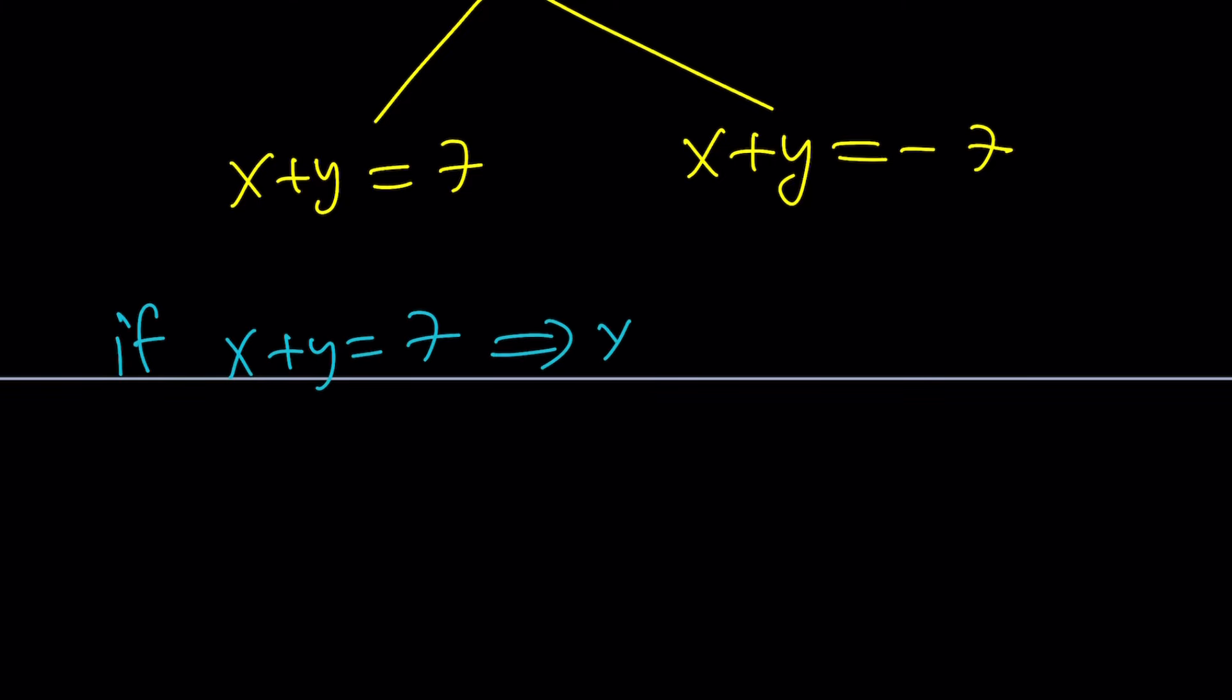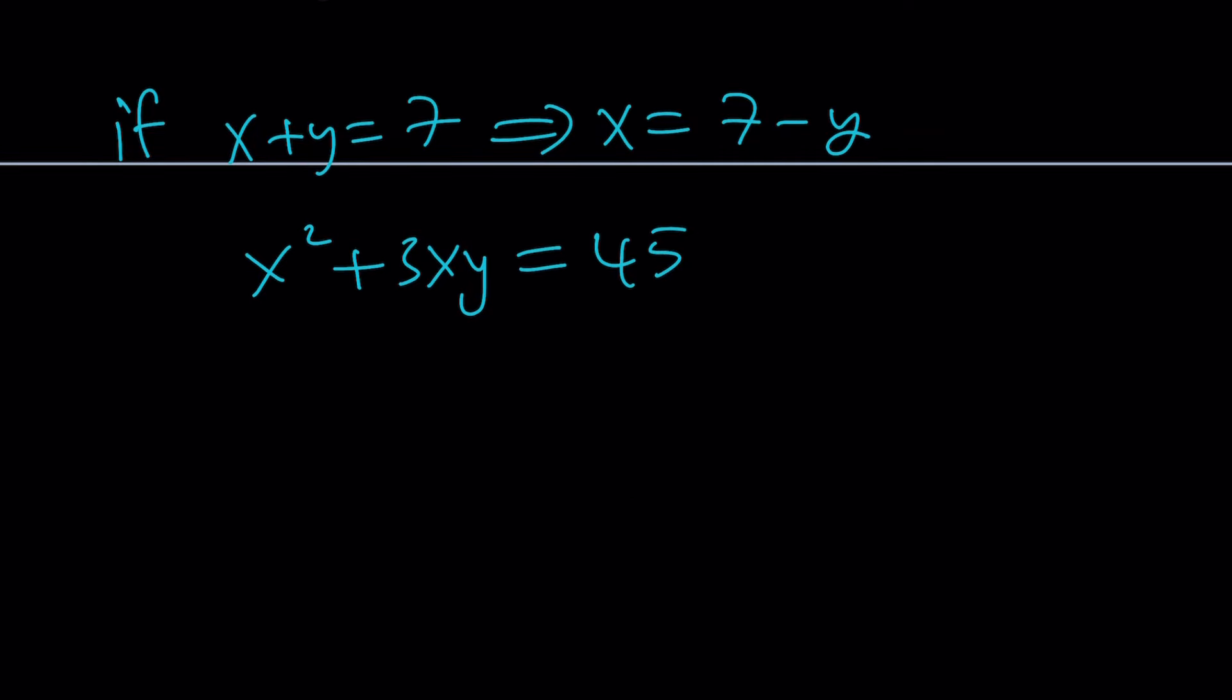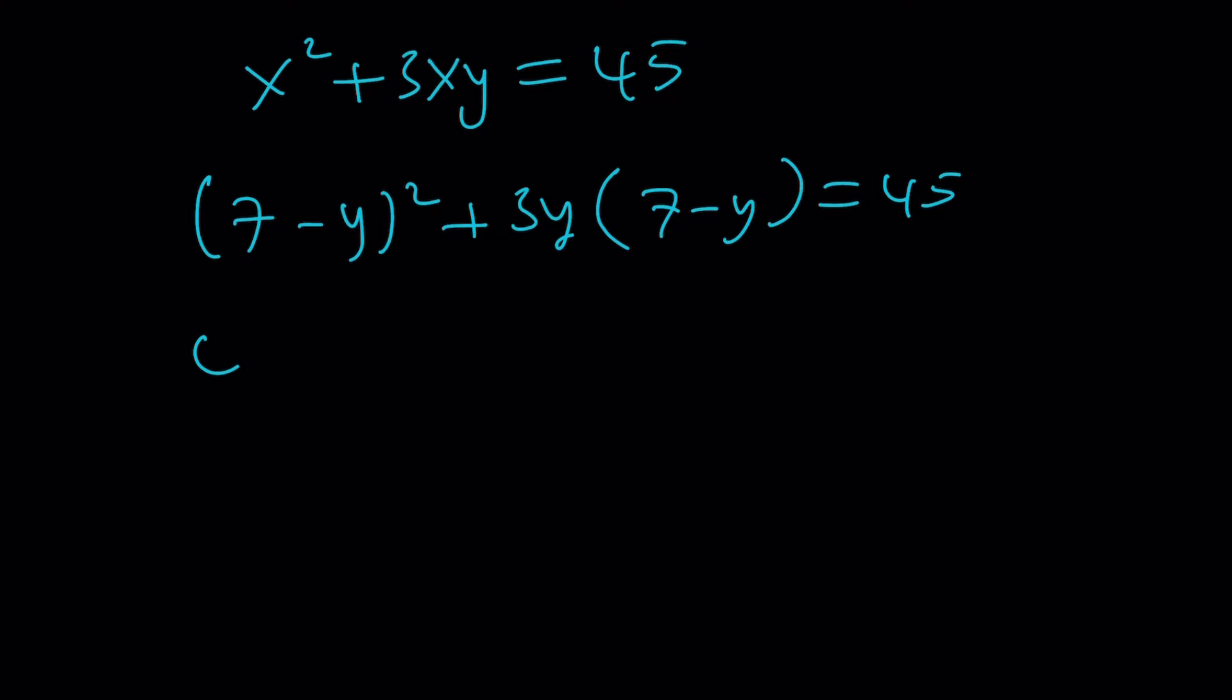If x plus y is equal to 7, from here, I can isolate x as 7 minus y. And then remember the first equation, which is our favorite, right? x squared plus 3xy is equal to 45. And now we're just going to plug in this for x. 7 minus y squared plus 3y times 7 minus y is equal to 45. And go ahead and expand this. You're going to get 49 minus 14y plus y squared plus 21y minus 3y squared equals 45.